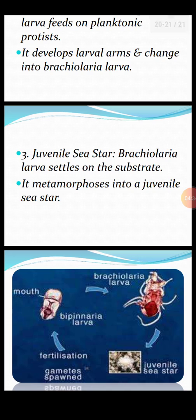The third stage is the juvenile sea star — juvenile means young. The brachylaria larva settles on the substrate or surface and metamorphoses into a young juvenile sea star. You can clearly see the images of all three larval types: bipinnaria, then brachylaria, and finally the juvenile sea star.